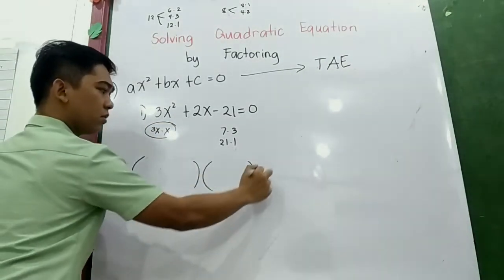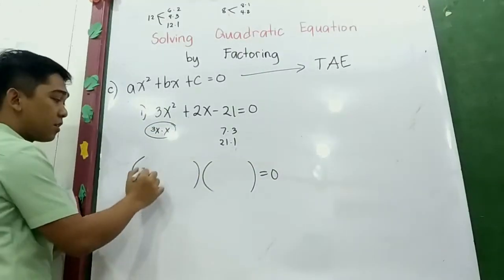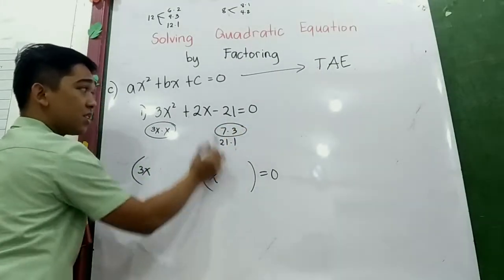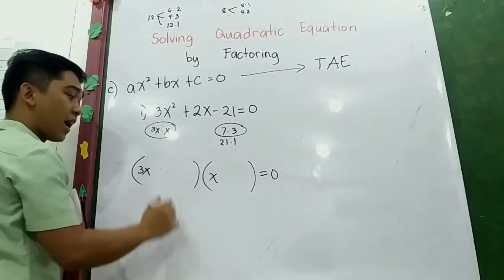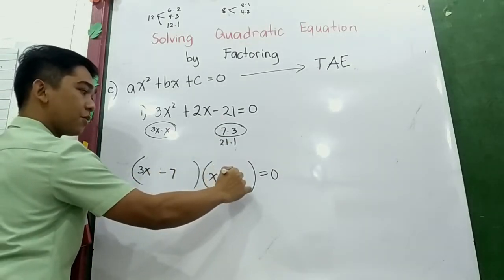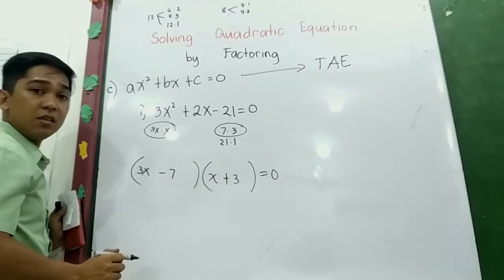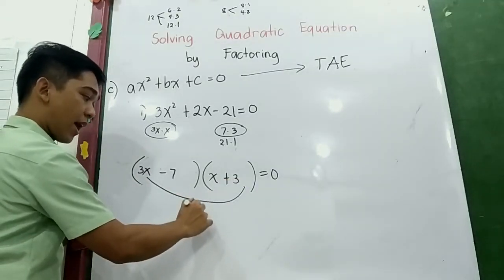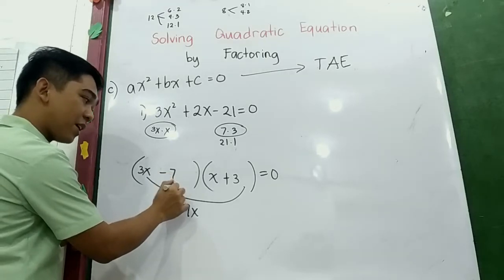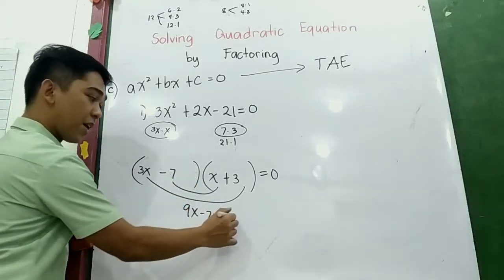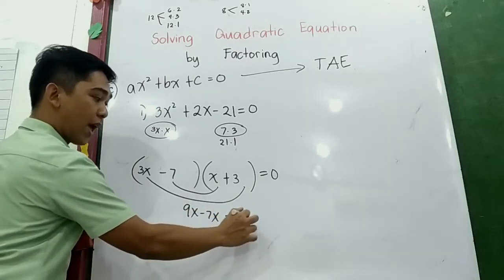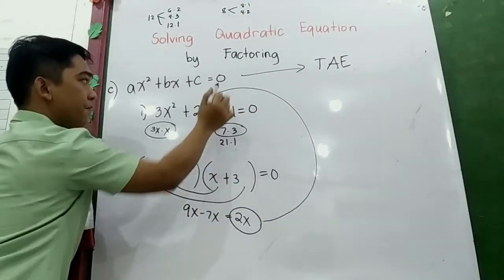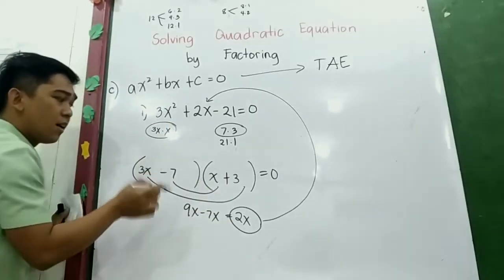Since 3 is a prime number, we have 3x and x as our factors. Try 7 and 3. Since this is negative, one sign must be negative. Let's try (3x − 7)(x + 3). Check using FOIL: 3x times x = 3x², 3x times 3 = 9x, −7 times x = −7x. So 9x − 7x = 2x. That matches the middle term, so our factors are correct!